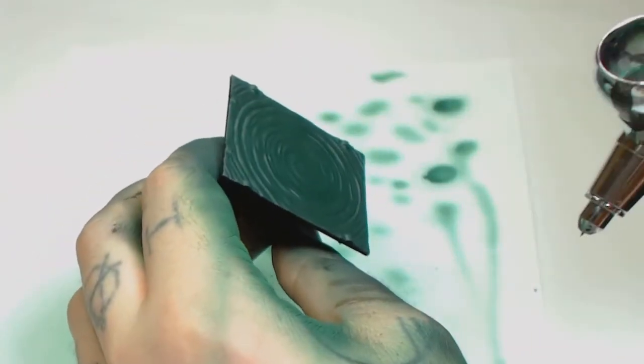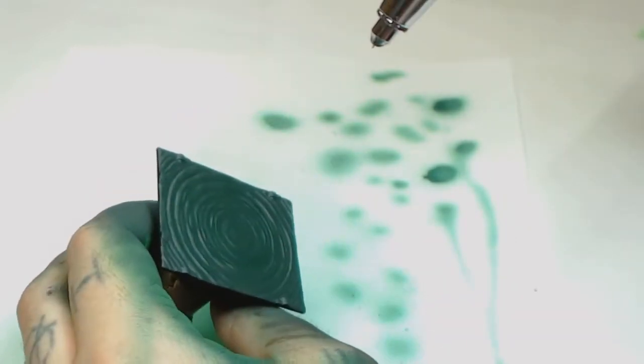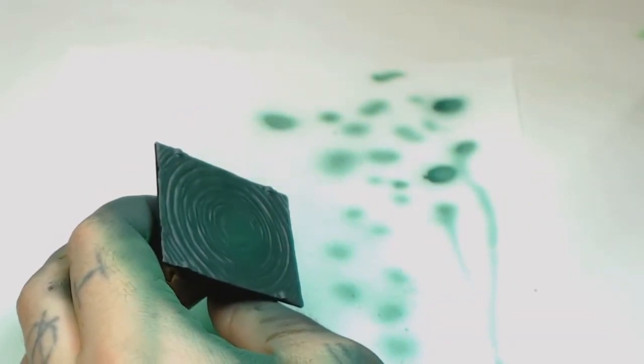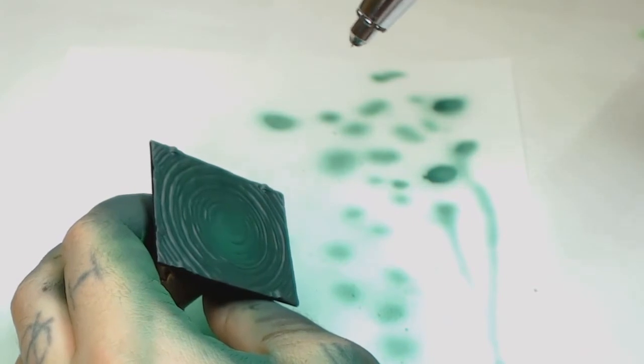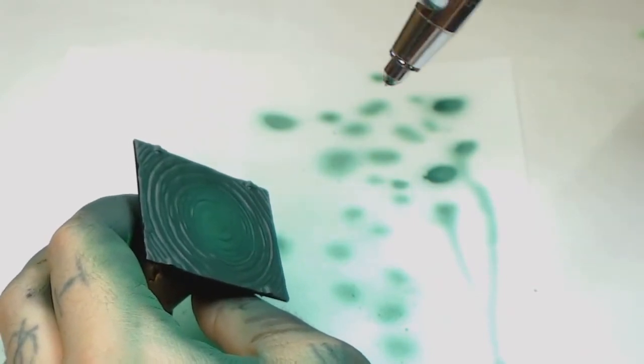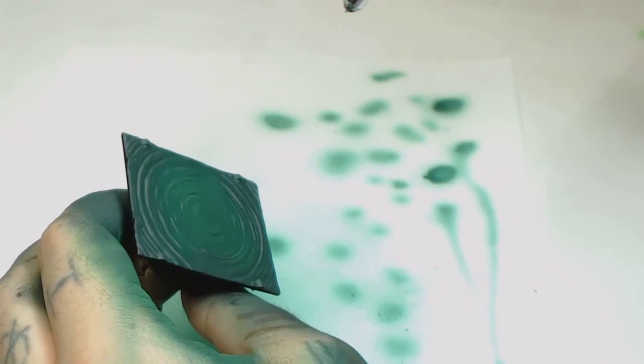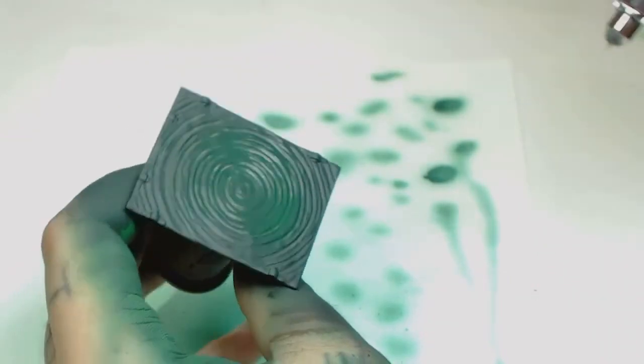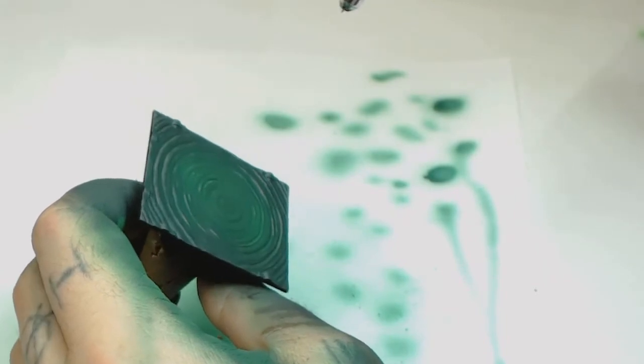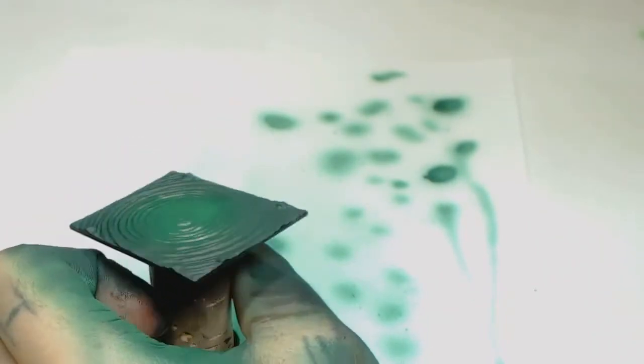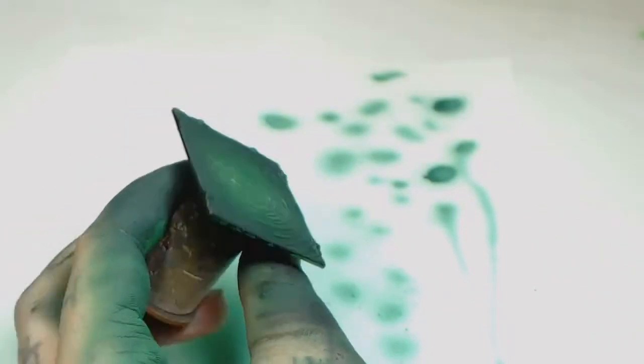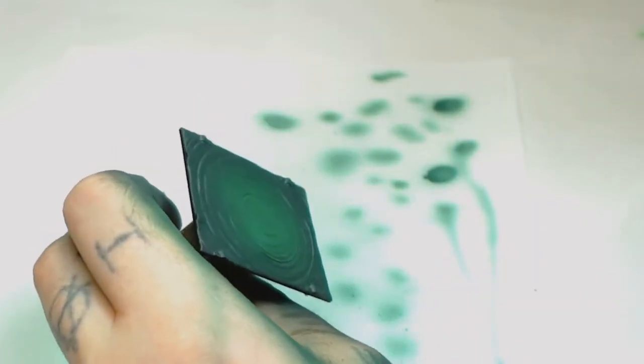This is just the base coat. Then we're going to move up to Moot Green by Games Workshop and do the same thing, but with a little bit more control this time. Small bursts with the airbrush. You can do this with a brush—just wash and dry brush into the middle, even glaze it into the middle if you want, but those rough surfaces may be a bit of a pain.